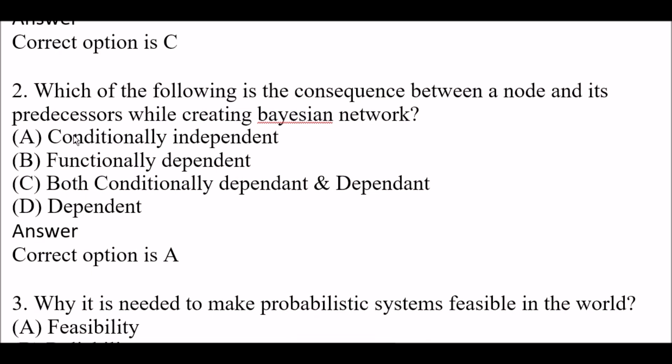Next question: Which of the following is the consequence between a node and its predecessors while creating a Bayes network? Option A: Conditionally independent, Option B: Functionally dependent, Option C: Both conditionally and functionally dependent, Option D: Dependent. Right answer is Option A — conditionally independent is the consequence between a node and its predecessors while creating a Bayes network.